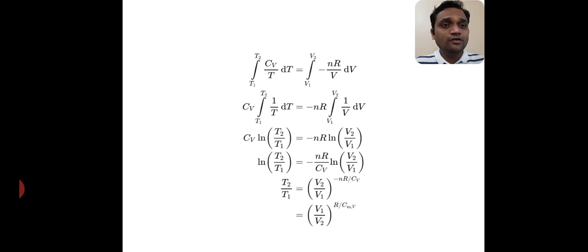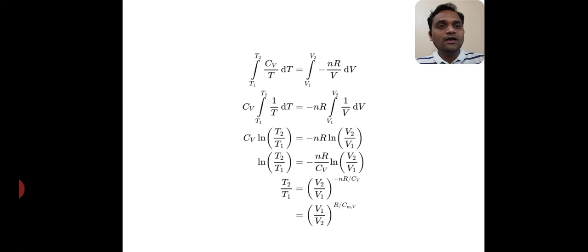Taking the antilog gives T₂/T₁ = (V₂/V₁)^(−NR/Cᵥ). Changing the sign of the exponent by inverting the volume ratio gives T₂/T₁ = (V₁/V₂)^(R/CₘV), where CₘV is the molar heat capacity at constant volume.